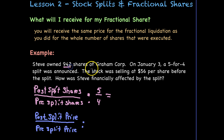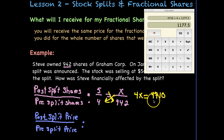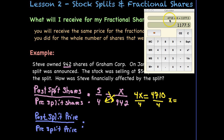Now let's set this equal to what we know. Pre-split, Steve owns 942 shares, so that goes in the denominator. Post-split, we don't know — that's what we're trying to figure out, to determine if we have any fractional shares. We cross multiply and end up with 4x equals 4,710. Dividing both sides by 4, we get 4,710 ÷ 4 = 1,177.5 shares. So we do have a fractional share — specifically 0.5 of a share.